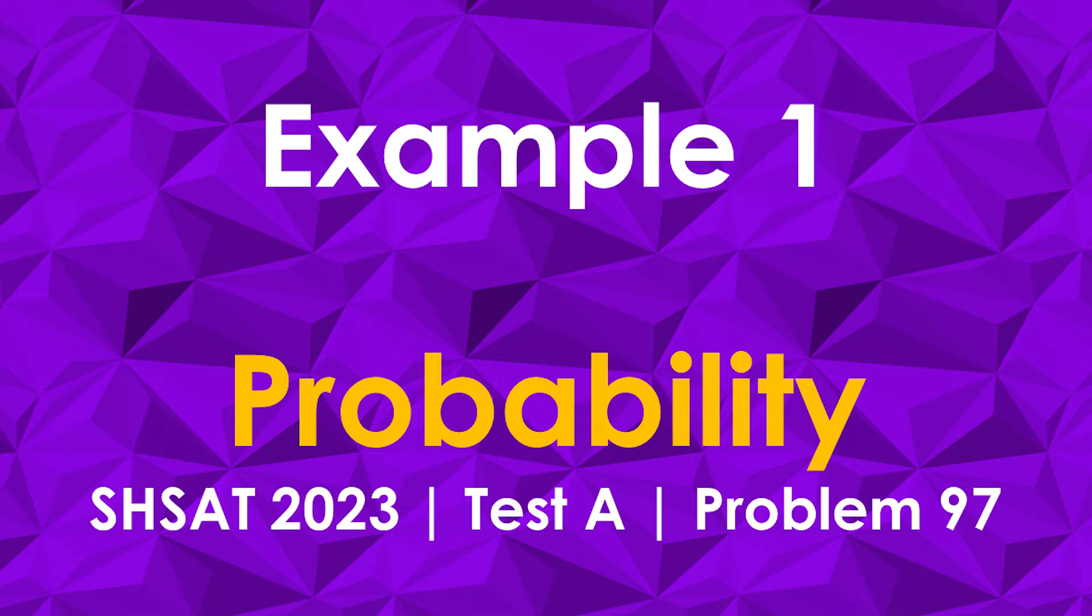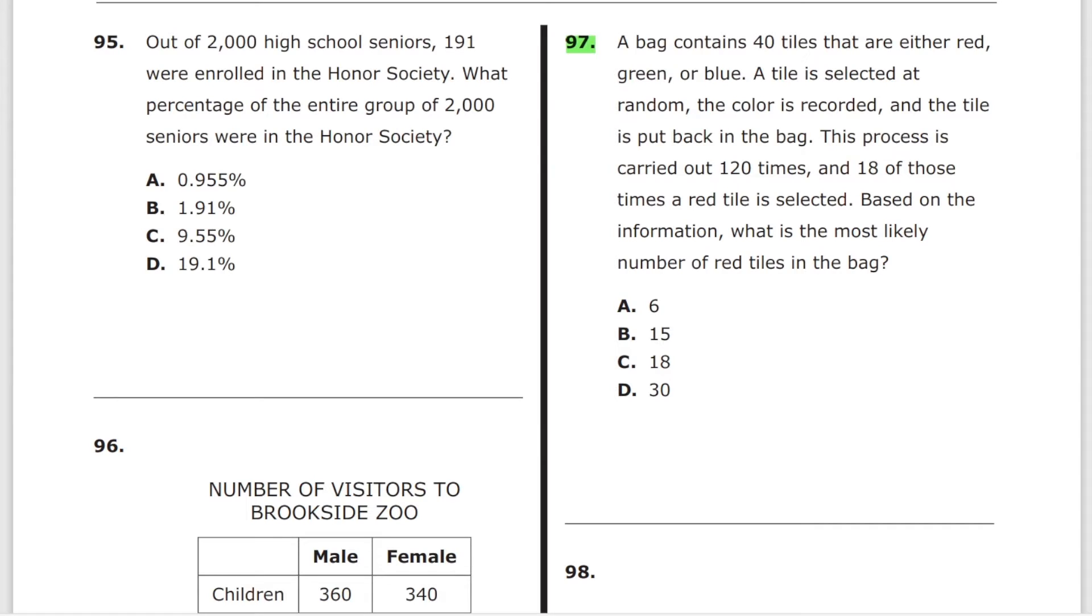Problem 97 from test A. A bag contains 40 tiles that are either red, green, or blue. A tile is selected at random, the color is recorded, and the tile is put back in the bag. This process is carried out 120 times, and 18 of those times a red tile is selected. Based on the information, what's the most likely number of red tiles in the bag? It's a two-step process. The probability of red is 18 divided by 120.